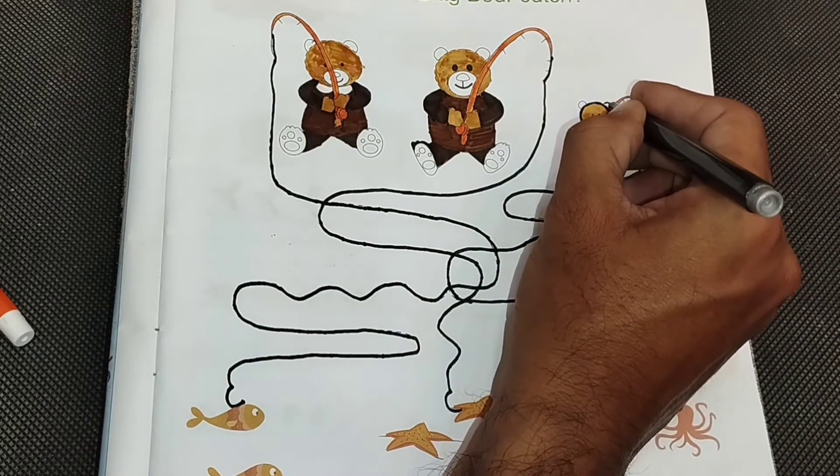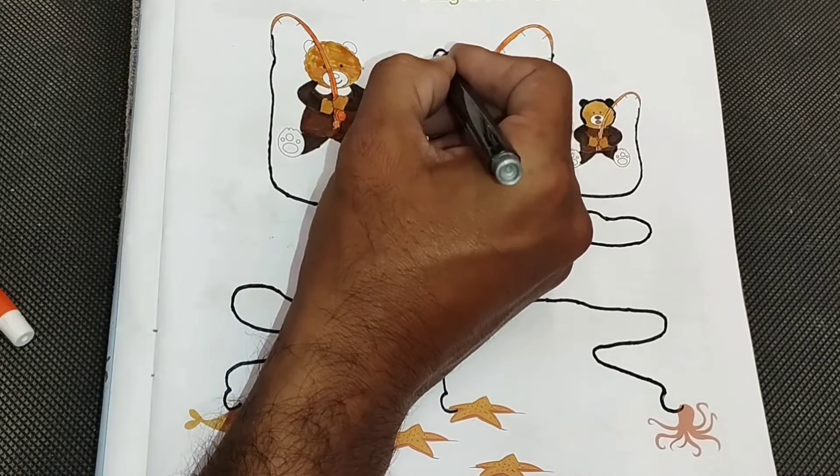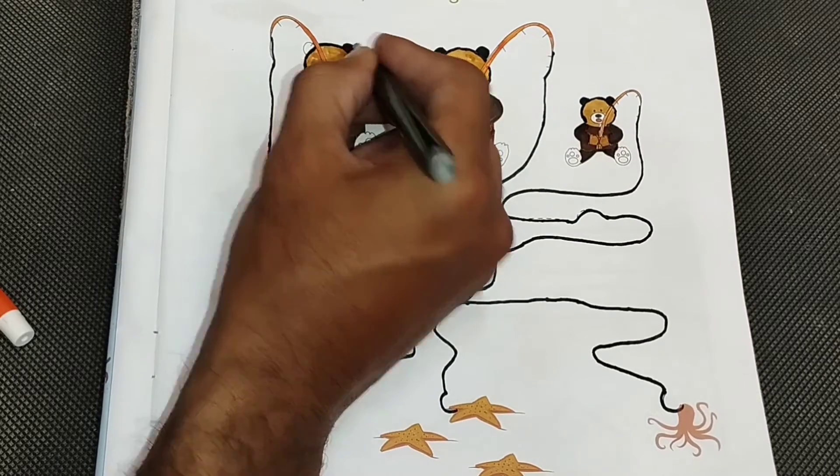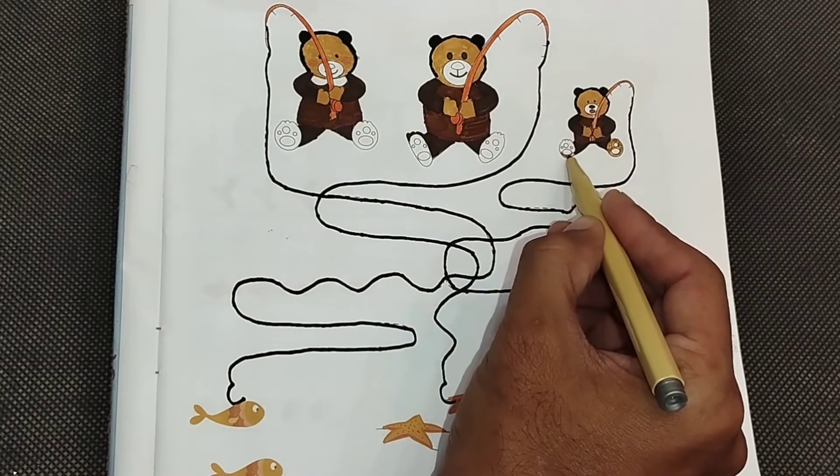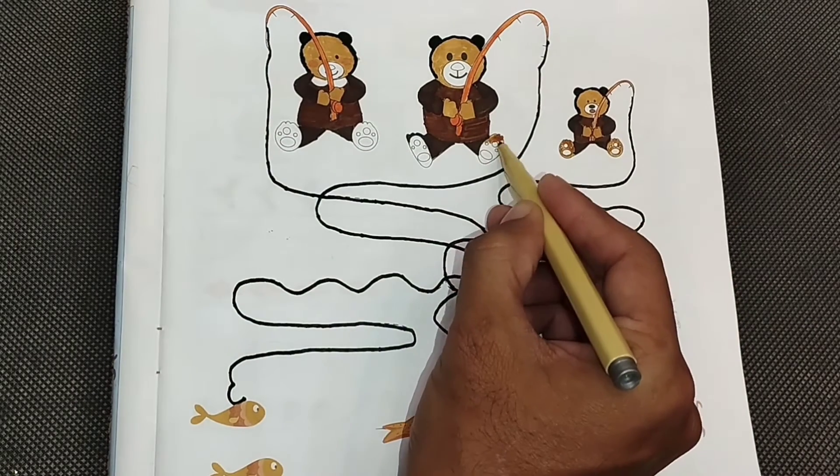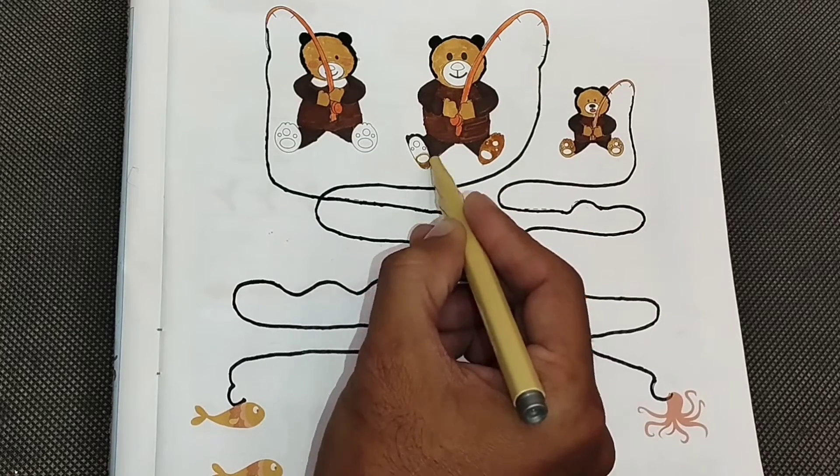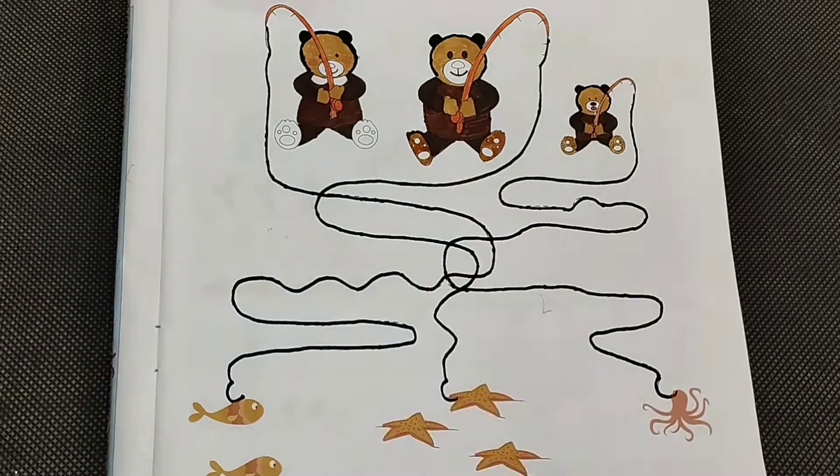U is for Umbrella, U-U-Umbrella. V is for Van, V-V-Van. W is for Watch, W-W-Watch. X is for Box, X-X-Box.